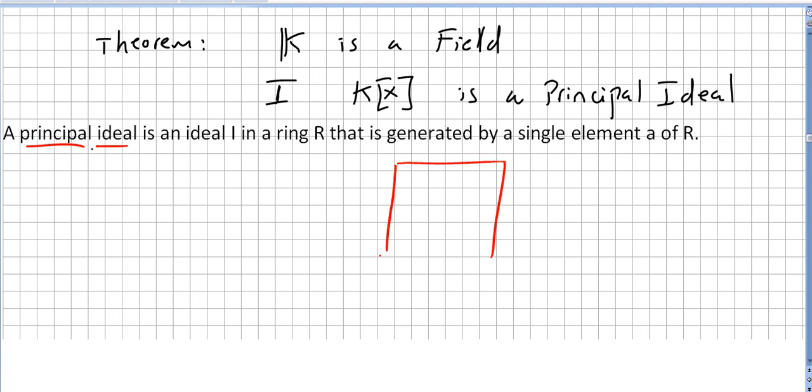So if you have a commutative ring R and you have an ideal here, and if your ideal is generated by a single element a, we say that the ideal is a principal ideal. So if K is a field and I is an ideal, the ring of polynomials will always be a principal ideal. So here we can say a bit more, however.